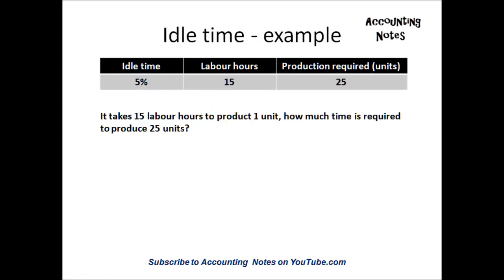So let's look at an example. We have this company that produces 25 units. It takes 15 labor hours to produce 1 unit and there is 5% idle time.